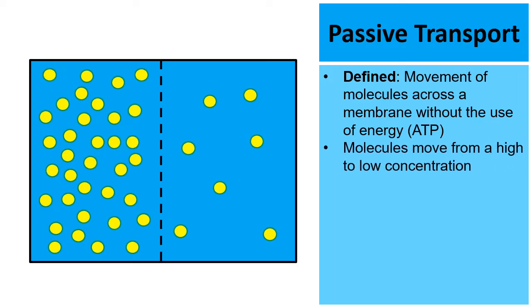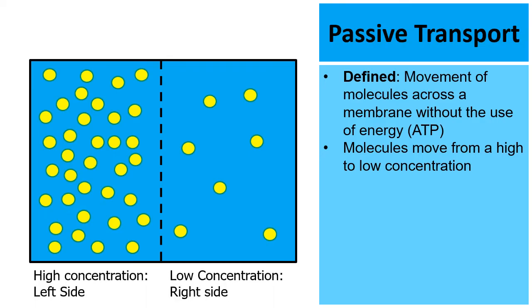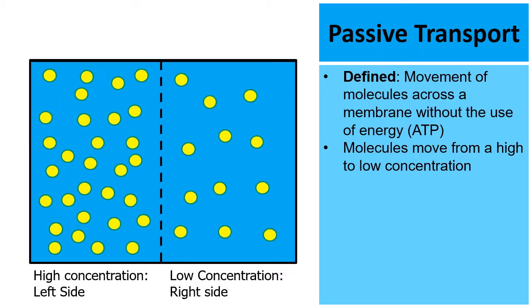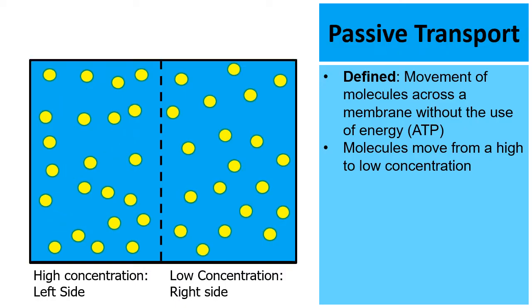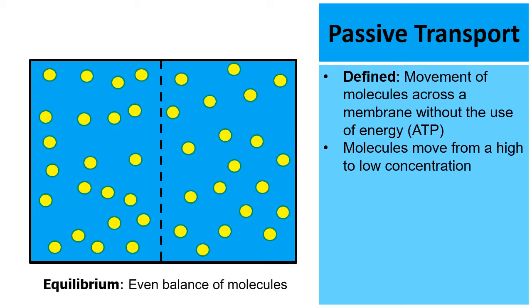During passive transport, molecules move from a high concentration to an area of low concentration. Look at the picture — on the left side of the box, the yellow dots are more highly concentrated, and on the right side there's a lower concentration. Over time, if these yellow dots represent molecules, they will move mostly from the left to the right until there's an even balance, and we call this balance equilibrium.